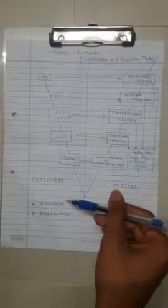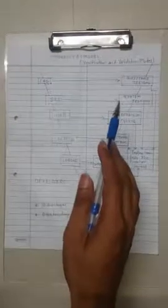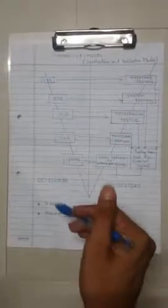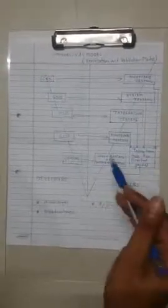The advantages of the V&V model: testing starts in very early stages of product development, which avoids downward flow of defects and reduces rework. Testing is involved in every stage of product development. Deliverables are parallel — as developers build the SRS, testers are testing the CRS and writing acceptance test plans and cases. Thus the project is completed faster and total investment is less as there is less or no rework.